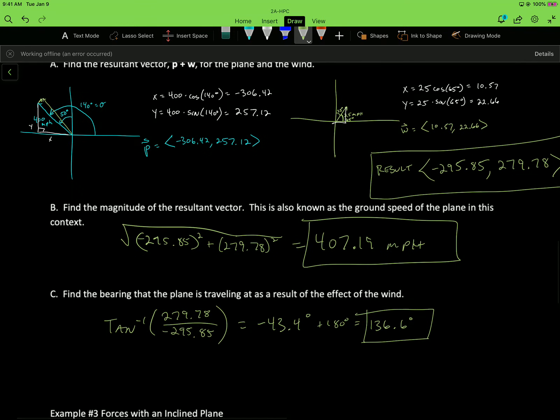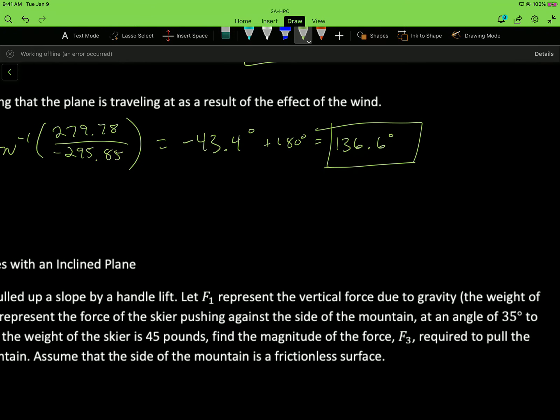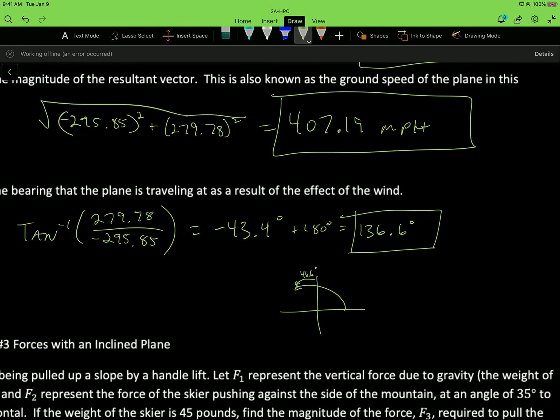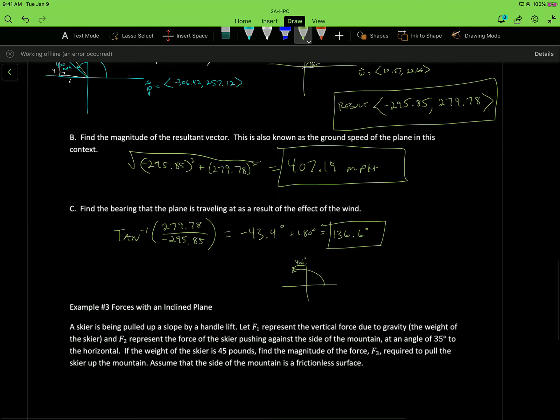So plus 180 equals 136.6 degrees would be our direction angle. If you wanted to do the whole west of north, so here's our north. 136 is somewhere up here. So then we would have to figure out how many degrees of north that is. So I can go 136 minus the 90. So I can call it 46.6 degrees west of north if you want. But I'm okay with just the direction angle in pure mathematics form.